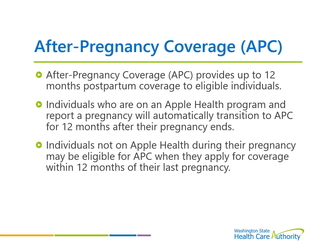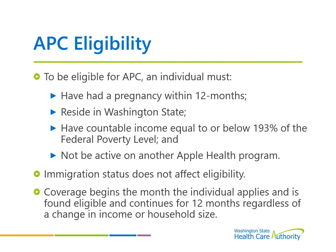After Pregnancy Coverage. After Pregnancy Coverage (APC) provides up to 12 months postpartum coverage to eligible individuals. Individuals who are on an Apple Health program and report a pregnancy will automatically transition to APC for 12 months after their pregnancy ends. Individuals not on Apple Health during their pregnancy may be eligible for APC when they apply for coverage within 12 months of their last pregnancy. To be eligible for APC, an individual must have had a pregnancy within 12 months, reside in Washington State, have countable income equal to or below 193% of the federal poverty level, and not be active on another Apple Health program. Immigration status does not affect eligibility. Coverage begins the month the individual applies and is found eligible, and continues for 12 months regardless of a change in income or household size.